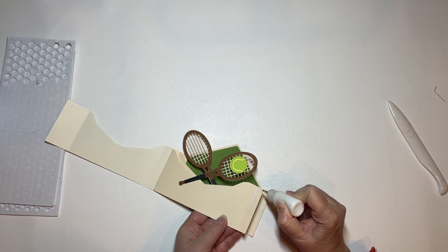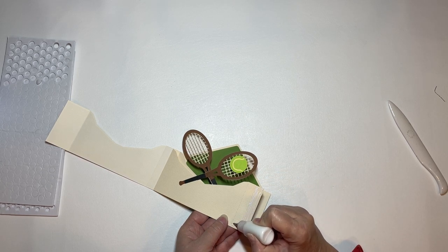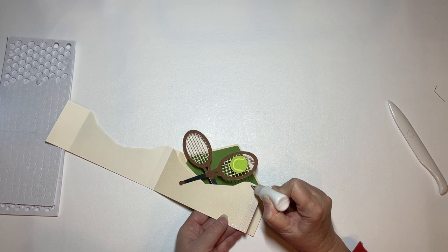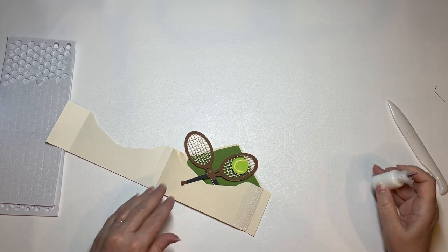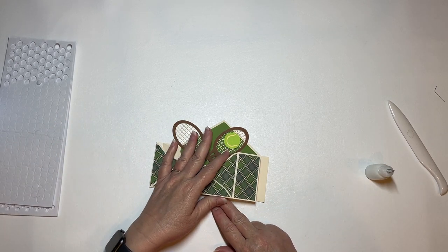So I'm being careful to stay inside the score line and not putting my glue on too thick, because I don't want it to ooze over the edge and glue my layers together.